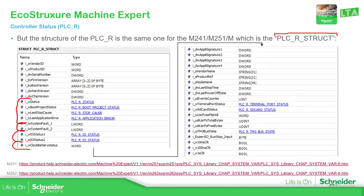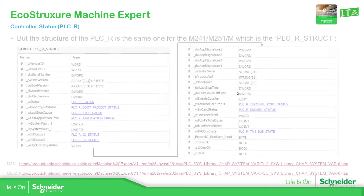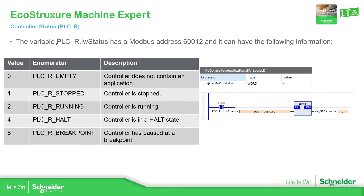So you have this information available once you are, for example, in the watch, or you want this variable in your program. The important one is PLC underscore R dot IW status, which is the status of the controller. This is the enumerator that it's using. So depending on the value that it has, it gives us this enumerator. You can see over here that you can find the status of the controller: it's empty, stop, run, and hold breakpoint.